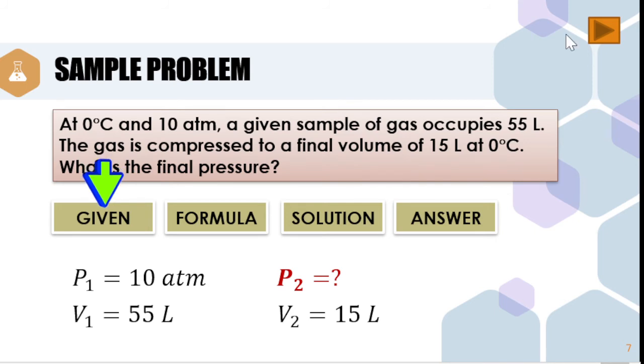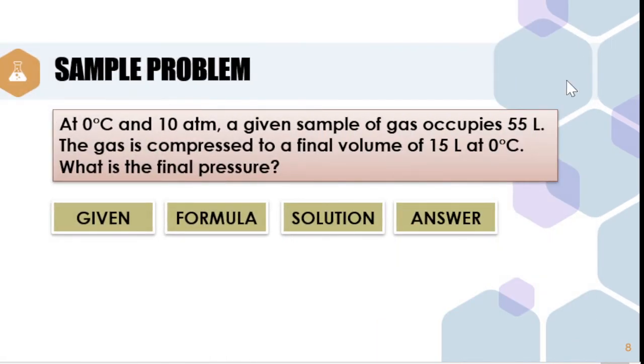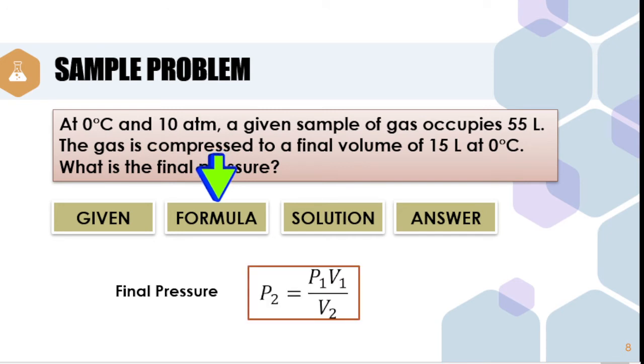Now, let us proceed to the next step. We are going to find out the formula. Since we are looking for the final pressure, the formula is P2 is equal to P1 multiplied by V1 divided by V2.